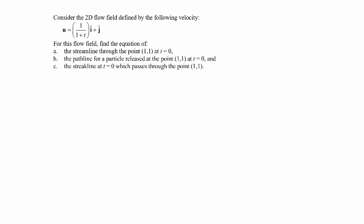Starting with the streamline, we know that the slope of a streamline at any point is equal to the slope of the velocity vector — that'll be u_y over u_x. Here the u_y velocity component is just 1, right up here it's just a value of 1, and then the u_x component will be 1 over 1 plus t.